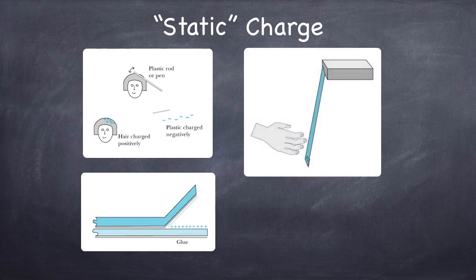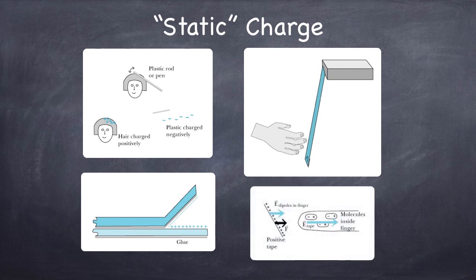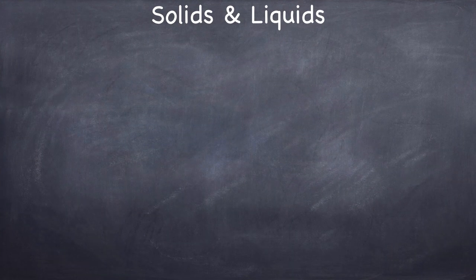If you hang such a piece of tape from a support and bring your hand up to it, you'll notice that the tape is attracted to your hand. And the story goes just like the story I just told you. Essentially, there's a charge on the tape, which polarizes the stuff in your finger, blood and so on, flesh, and that polarized finger then produces a dipole field that acts back on the tape.